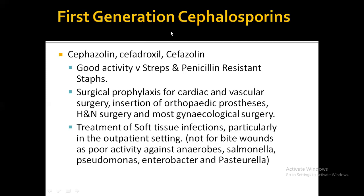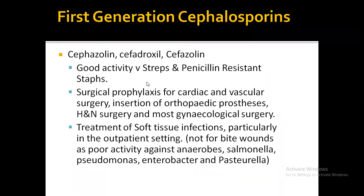Coming to first generation cephalosporins — cefadroxil, cefazolin, and cephalexin — they have good activity against gram-positive bacteria. They are used in surgical prophylaxis for cardiac and vascular surgery, insertion in orthopedic procedures, head and neck surgeries, and gynecological surgeries. Nowadays they are less commonly used because of resistance. The preferred drugs now are the third generation. They are also used for soft tissue infections in outpatient settings, but not for bite wounds as they are less active against anaerobes.